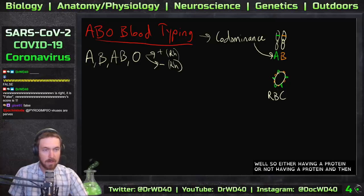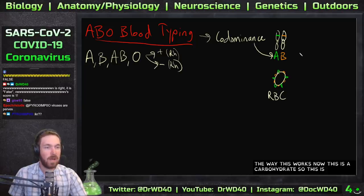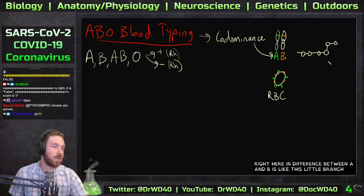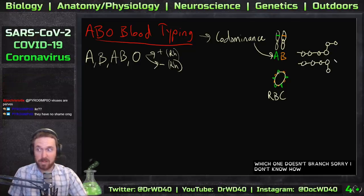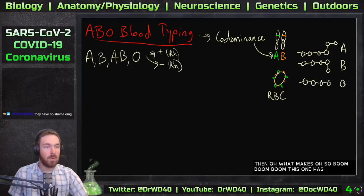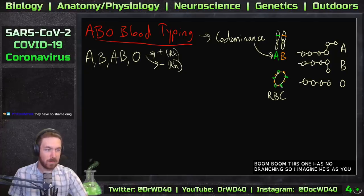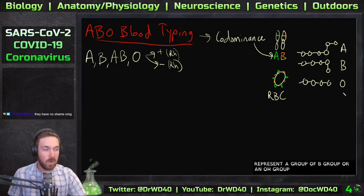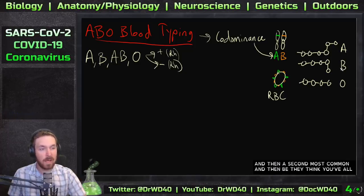This is actually a little chain of carbohydrates, and the difference between A and B is a little branching that occurs at the end — one has a branch and the other doesn't. Let's say this one's A and this one's B. For O, there's no branching at all. O is actually the most common blood type because it's been around the longest. A is second most common, and B is thought to have evolved later or in a different part of the world, so AB is actually the least common.